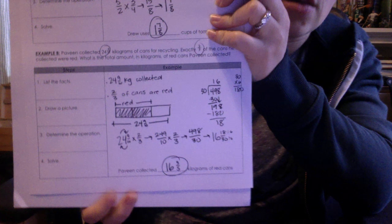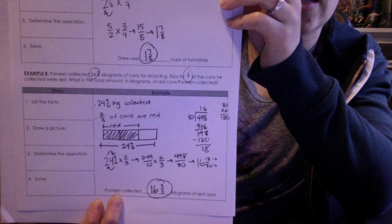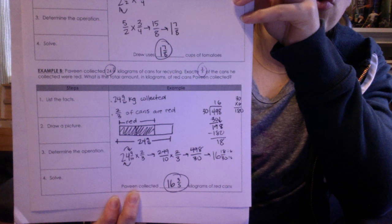Example B. We've got Pavin collecting 24 and 9 tenths kilograms of cans for recycling. Exactly 2 thirds of those cans were red. We want to know the total amount in kilograms of red cans that Pavin collected.